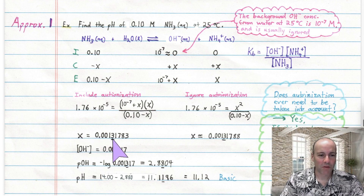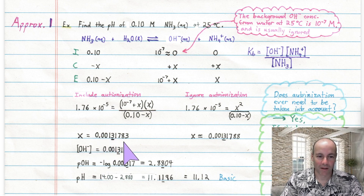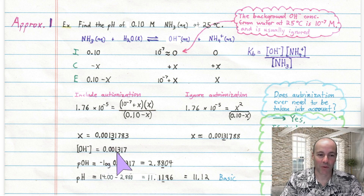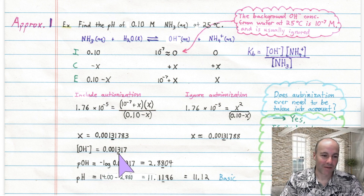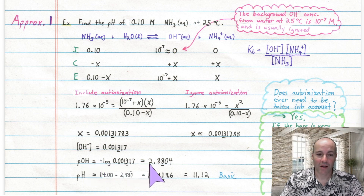So X is 0.0013. To get the hydroxide concentration at equilibrium, you add 10⁻⁷ to X. But 10⁻⁷ is tiny compared to 0.0013 — adding it is like adding nothing. By significant figure addition rules, you're still left with 0.0013. So the hydroxide concentration rounds to 0.0013 molarity.